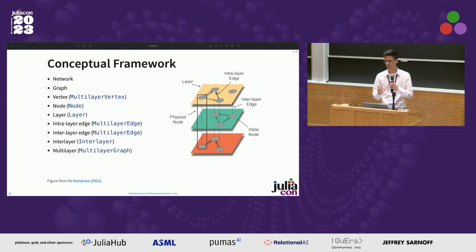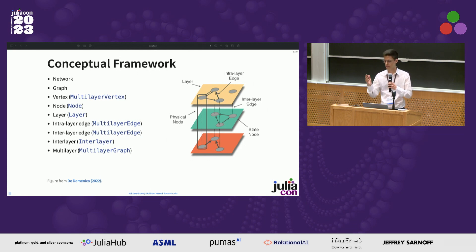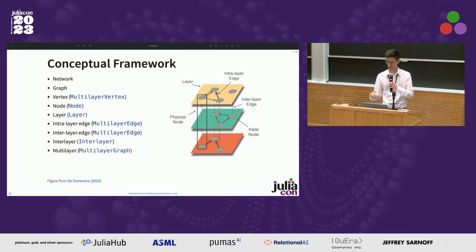By node we mean the global, multilayer-wide equivalence class of vertices — sometimes called physical nodes in the literature. A layer is any kind of possible graph with all sorts of possible features: weighted, unweighted, with metadata, etc. An interlayer is any bipartite graph connecting the layers and constructing, therefore, the multilayer graph overall.